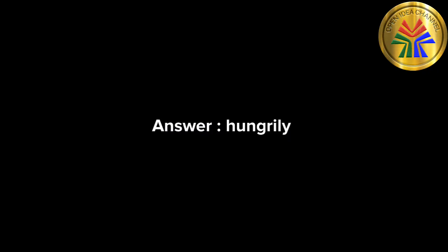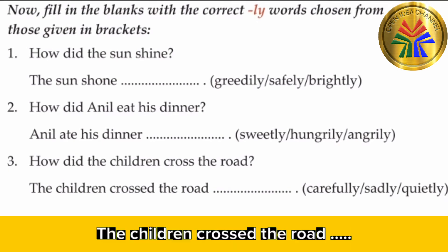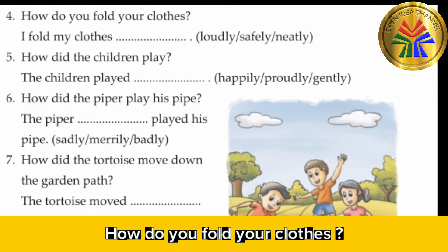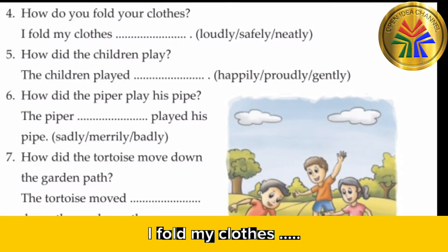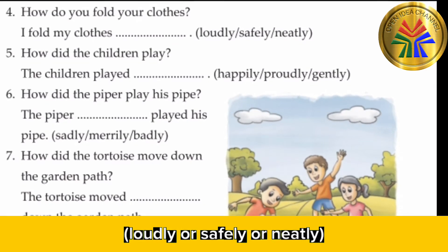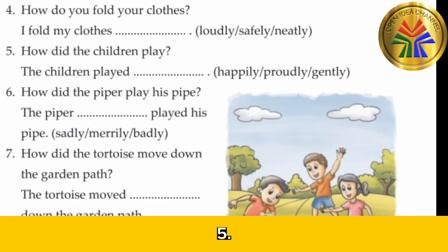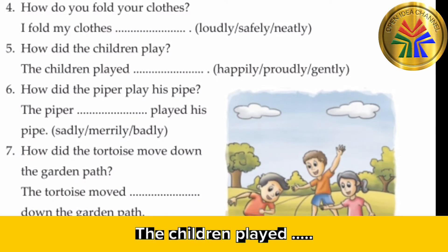Three: How did the children cross the road? The children crossed the road — carefully, sadly, or quietly? Answer: carefully. Four: How do you fold your clothes? I fold my clothes — loudly, safely, or neatly? Answer: neatly.